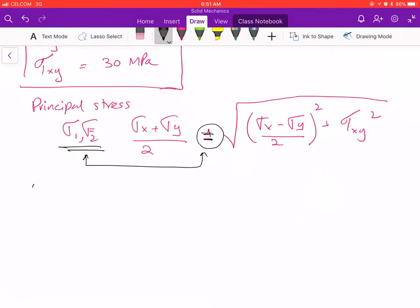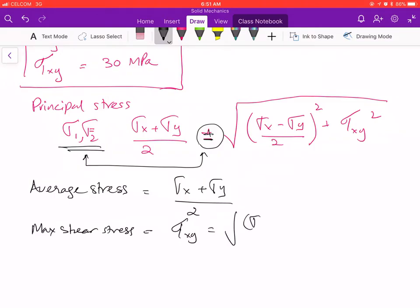Your average stress is simply (σx + σy)/2, and your maximum shear stress τxy is simply (σx - σy)/2.